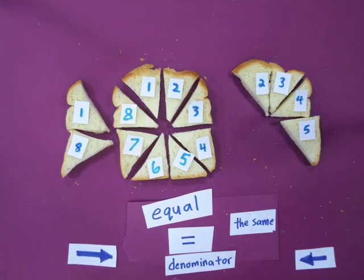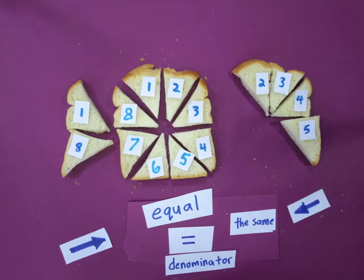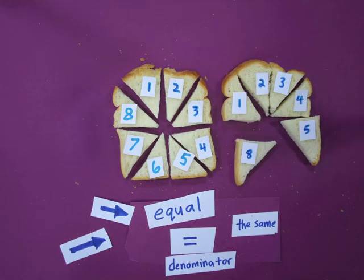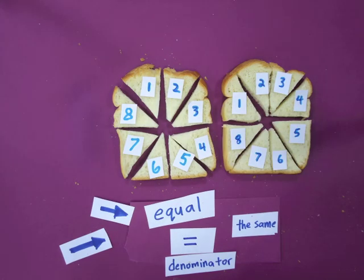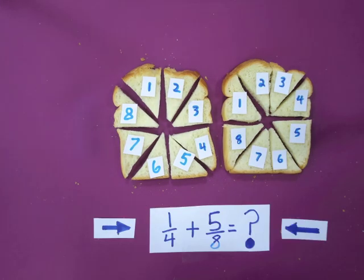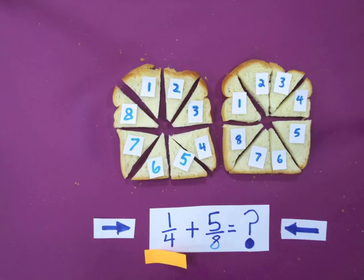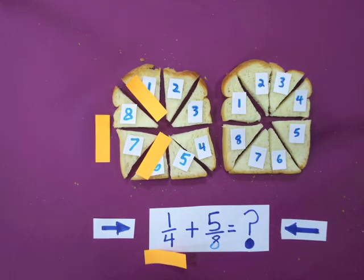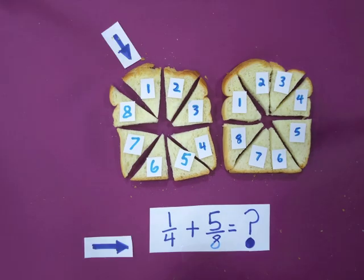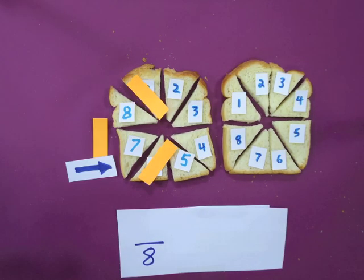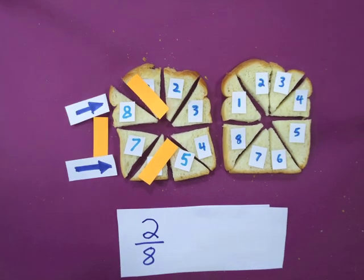Now, all of the denominators are the same or equal. What about the other part of the calculation?